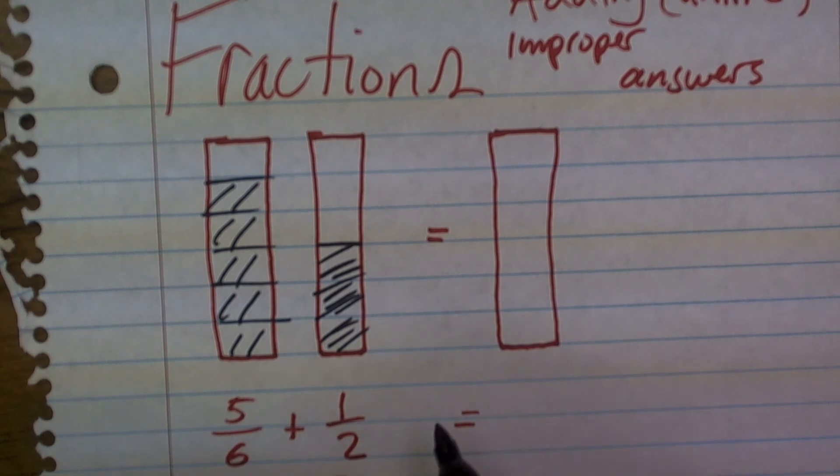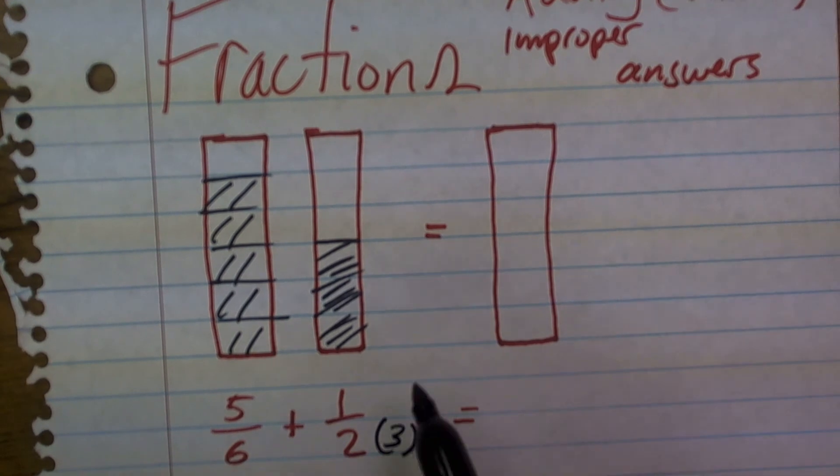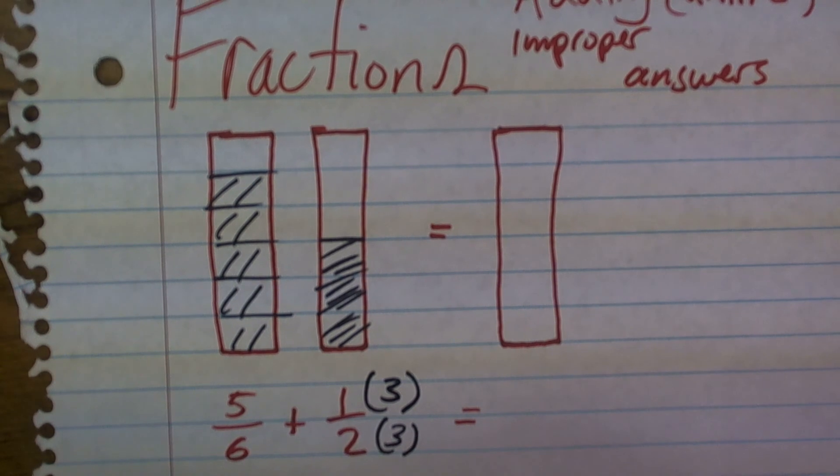So to get two to be six, I need to multiply it by three. I need to multiply six by one, but I don't need to write that out. Remember, I need to keep these equivalent fractions, so I need to multiply the top and the bottom by three.